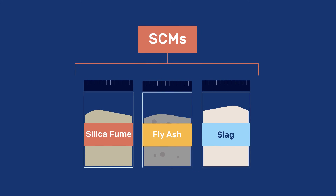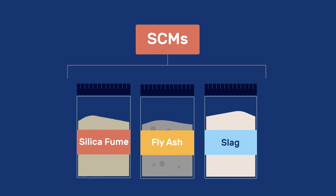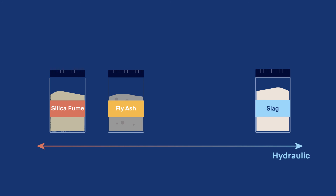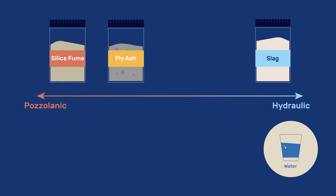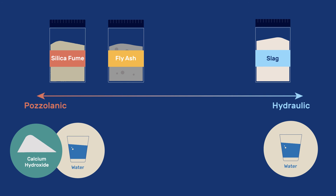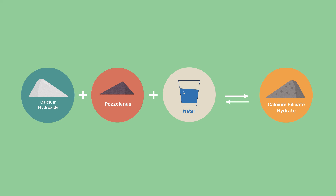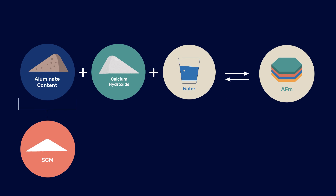A key issue for SCMs is their reactivity, and one way of expressing this is through their balance between hydraulic and pozzolanic characters. The more hydraulic a binder is, the more it can react with water alone, while the more pozzolanic an SCM is, the more it needs calcium hydroxide as a co-reactant. This classification mainly focuses on the silicate reactivity and the formation of C-S-H or C-A-S-H. Similarly to ordinary Portland cement, SCM hydration also leads to the formation of calcium aluminate hydrates, a reaction that involves some calcium hydroxide and can therefore also qualify as pozzolanic.